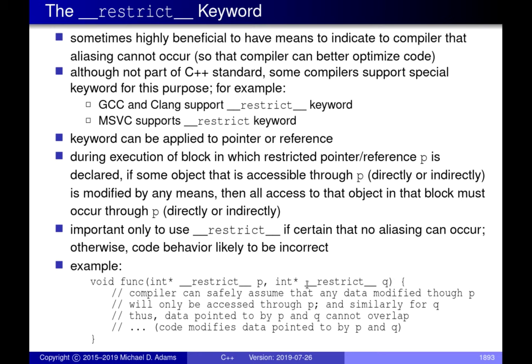What happens if you mark pointers as restricted but then aliasing actually occurs due to an error? In that case the code probably won't work correctly. The compiler acts on your promise and generates code that would not be valid if aliasing did happen. If you violate that contract by actually having aliasing occur, the code will likely produce incorrect results, because the generated code assumes no aliasing and the additional data dependencies aliasing introduces could make any vectorization compute a different result.